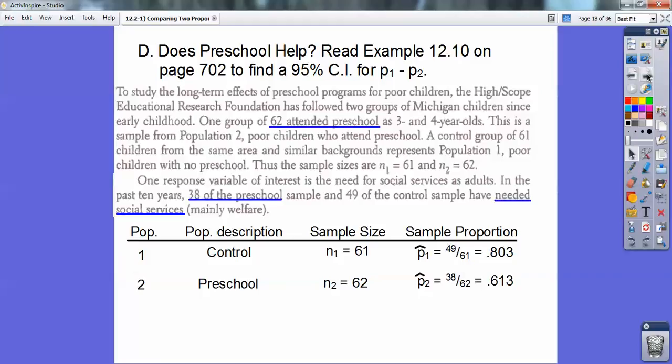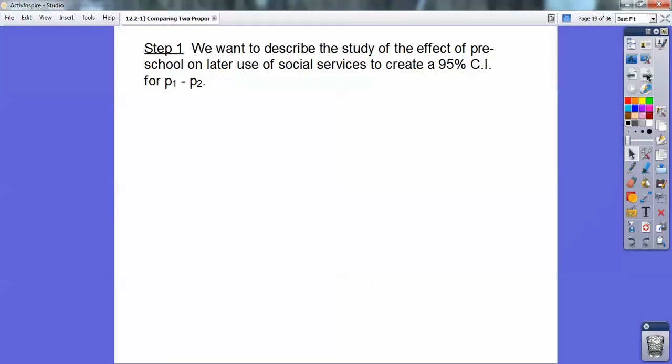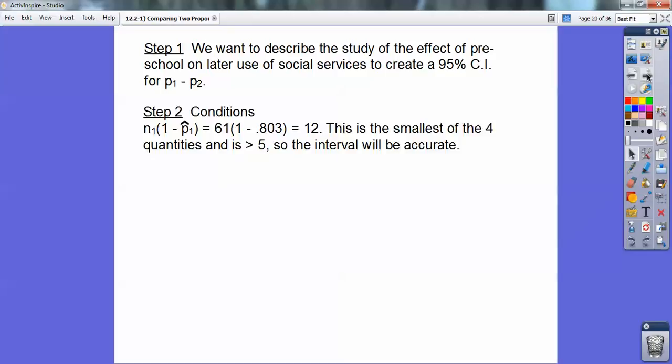So we want to describe the study of the effect of preschool on later use of social services to create a 95% confidence interval for the difference of their proportions right there. And yes, you've got to pick your pencils back up. Step two, we're going to conditions. We've got to meet the conditions, make sure they're met.